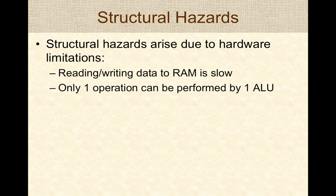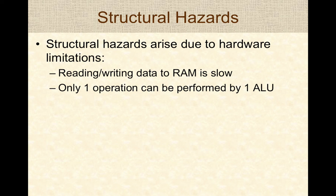The third type is structural hazards, which arise due to hardware limitations. These include the overhead of reading and writing data to RAM — which is typically very slow — and having only one ALU, meaning only one arithmetic or logic operation can be performed per clock cycle. These hardware-based limitations are called structural hazards and can prevent the pipeline from operating at maximum efficiency.